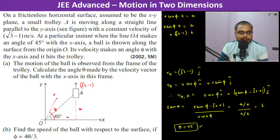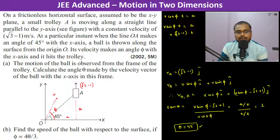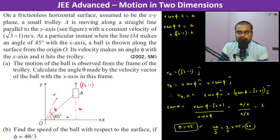Now we find the speed of the ball with respect to the surface given φ = 4θ/3. Substituting θ = 45°: φ = (4/3) × 45 = 60 degrees.